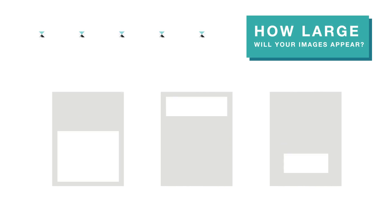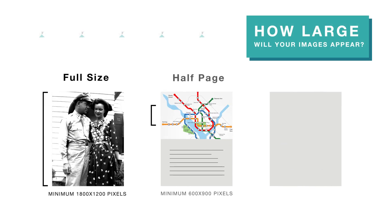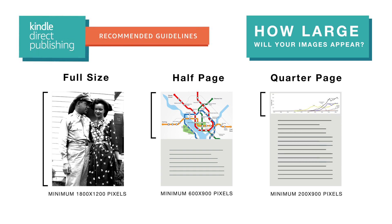Your first step is to decide how large your images will appear. Will they be full-size, half-page, or quarter-page? KDP has recommended guidelines to ensure the best reading experience. You can follow the link in this video's description to the KDP image recommendations help document.